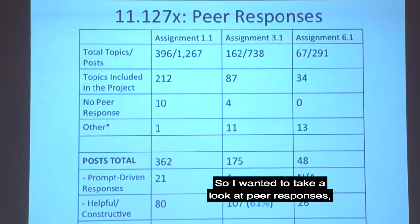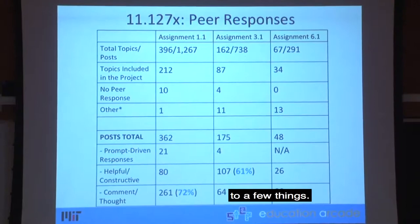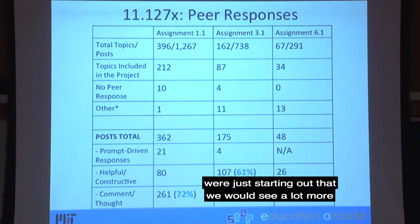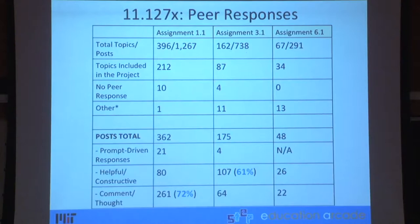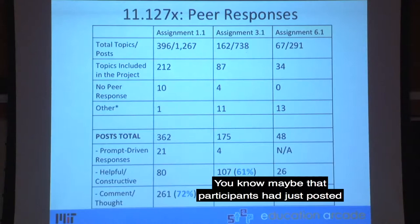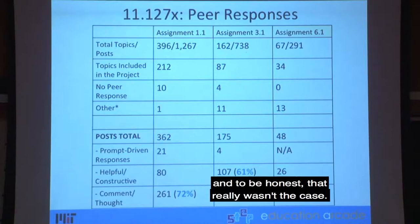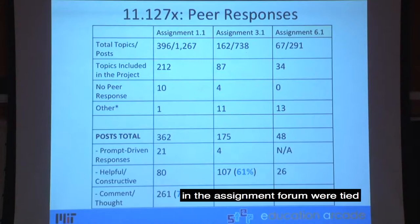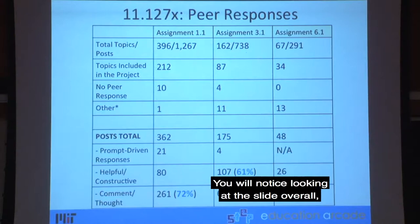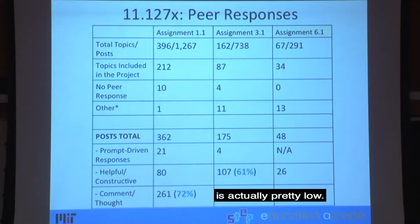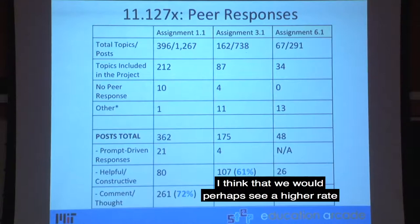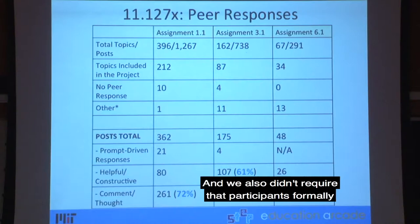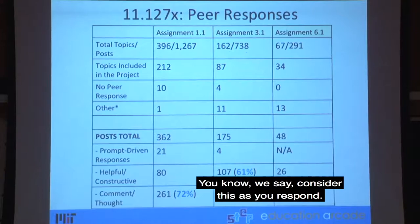Looking at peer responses across the three assignments, we thought that in Unit 1, since participants were just starting out, we would see more comment-thought type responses — and that did turn out to be the case. We also thought we'd find more miscategorized posts, where participants had just posted randomly in assignment forums, but that really wasn't the case. Most topics and posts in the assignment forum were tied to the particular assignment. The number of prompt-driven responses is actually pretty low, likely because our prompts are open-ended. A more rubric-driven approach might produce a higher rate of prompt-driven responses, and we also didn't require participants to formally structure their responses in terms of the prompts.